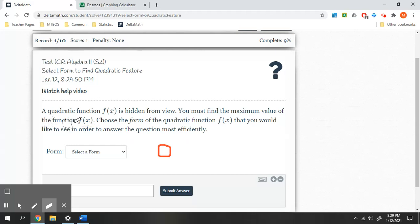All right, so this one is asking: a quadratic function is hidden from view, just like the last one, and we want to find the maximum value, the peak. Well, in order to find the maximum value, the maximum value is going to be at the vertex. So the form that's going to make the most sense here is going to be the vertex form.